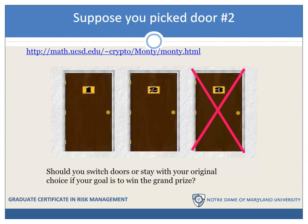The answer is you should switch doors — it gives you a better chance of winning. Originally door two had a one-third chance of winning. Doors one and three together had a two-thirds chance of winning. When I showed you that the prize is not behind door three, that two-thirds chance transfers entirely to door number one. So door two still has a one-third chance and door one has a two-thirds chance. You won't always win, but you'll win twice as often as if you stayed with your original door.